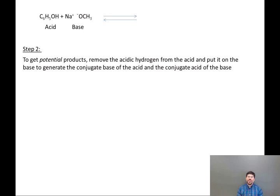Step two. We've got what we have so far done on this problem at the top of the screen. To get potential products, remove the acidic hydrogen from the acid and put it on the base. This will generate the conjugate base of the acid and the conjugate acid of the base.